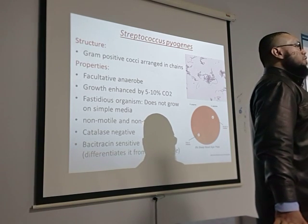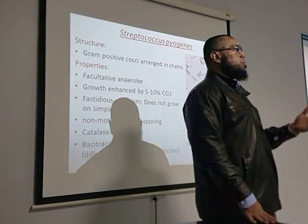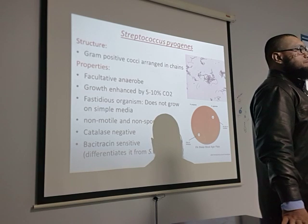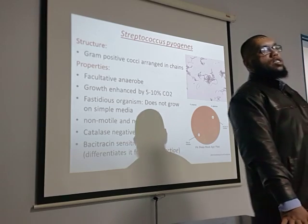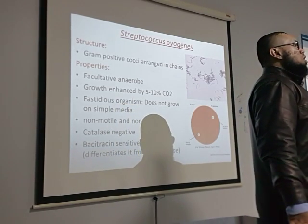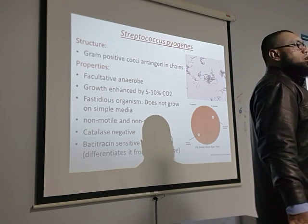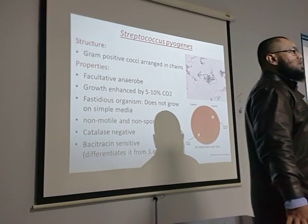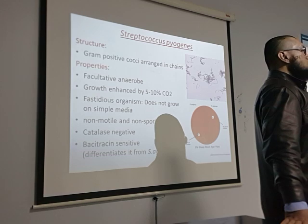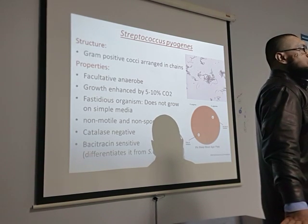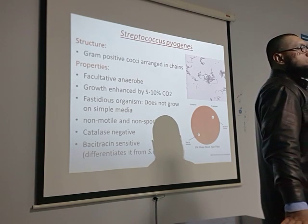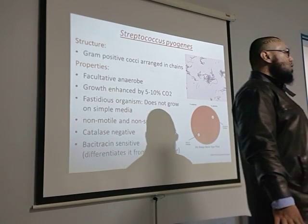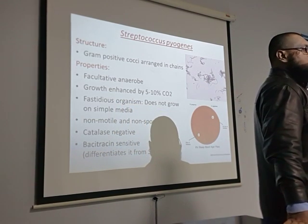Fastidious means having special growth requirements. All streptococci are fastidious — they will not grow on ordinary culture media like nutrient agar. They only grow on special culture media. They also require five to ten percent carbon dioxide for growth, making them capnophilic. They have no flagella so they are non-motile, do not produce spores so they are non-sporing, and are facultative anaerobes — they can grow in the presence or absence of oxygen.